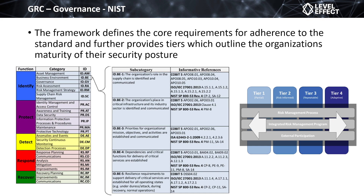These subcategories have their own category codes and informative references pointing to other cyber resiliency framework standards — from ISO, COBIT, and NIST SP 800-53. So we understand how our organization aligns with the core functions, what categories we satisfy, and to what degree — which helps determine which tier we fall within.